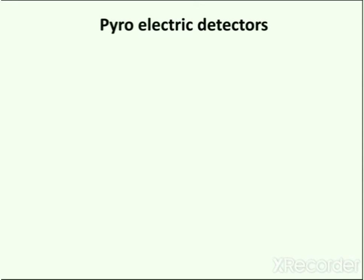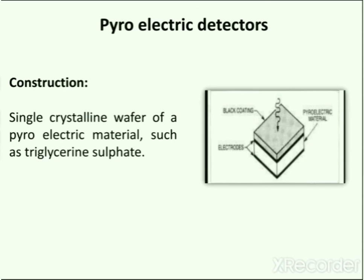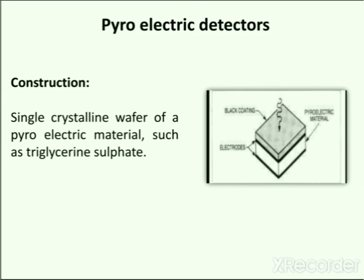The pyroelectric detector is made up of a single crystalline wafer of a pyroelectric material such as triglycine sulfate. Pyroelectric materials contain the property of pyroelectricity — the ability of certain materials to generate a temporary voltage when they are heated or cooled. Below the Curie temperature, pyroelectric materials exhibit electrical polarization. When radiation coming from the sample is incident upon this detector, the temperature is altered, causing the polarization to change, which is observed as an electrical signal.